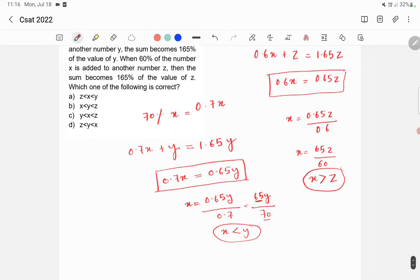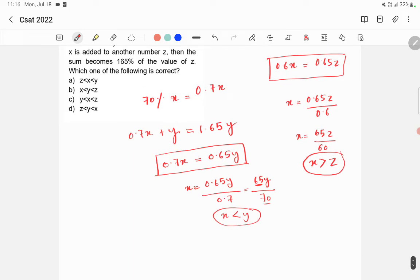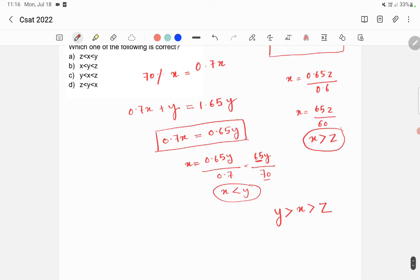So combining these two, we got x is greater than z and x is less than y. So what we will get is y is greater than x, then x is greater than z. Or we can write this as z is less than x, x is less than y. So option A is the correct answer.